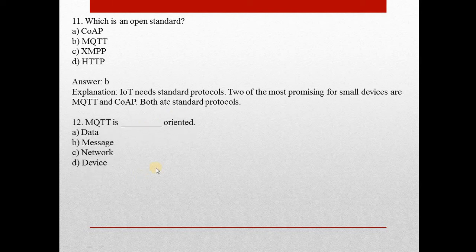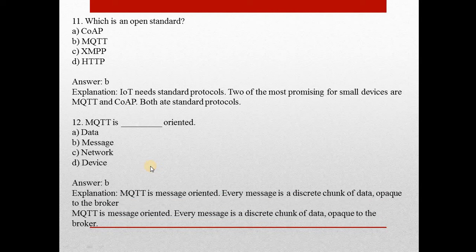Question twelve: MQTT is dash-oriented. Answer is B — Message. MQTT is a message-oriented protocol. Every message is a discrete chunk of data opaque to the protocol.